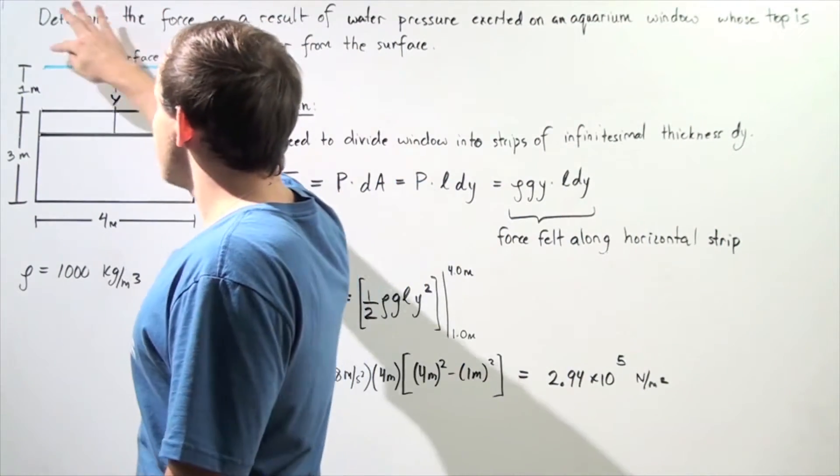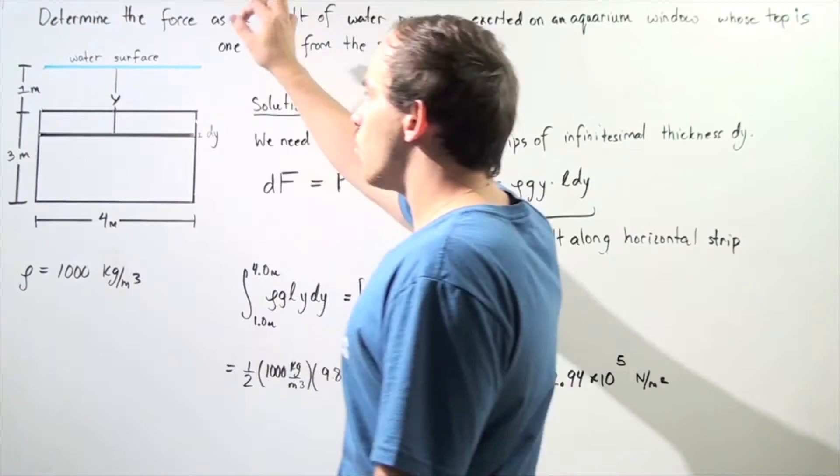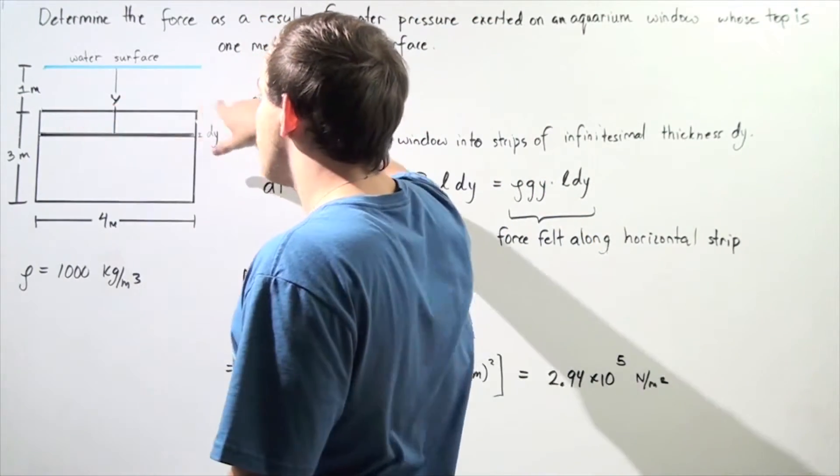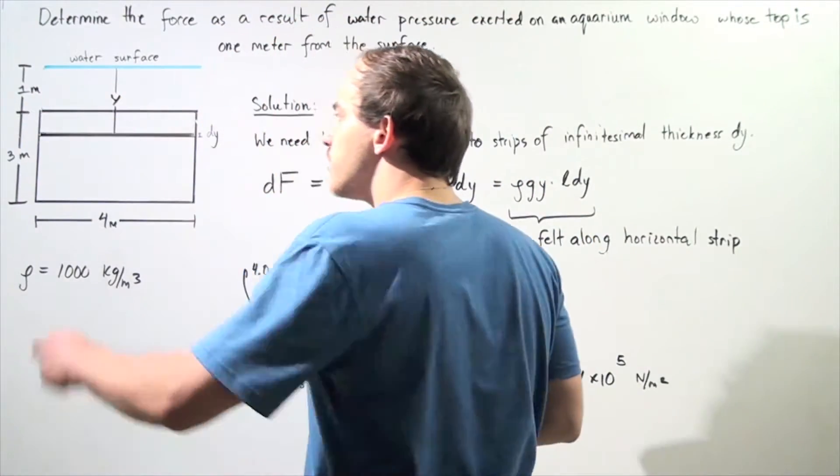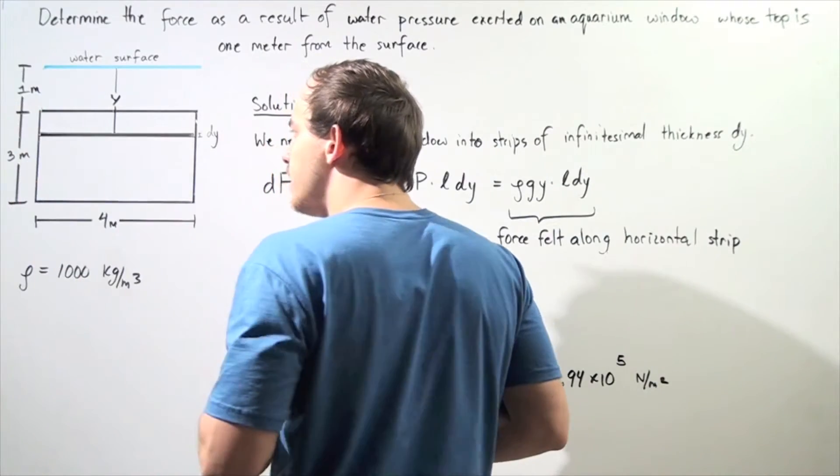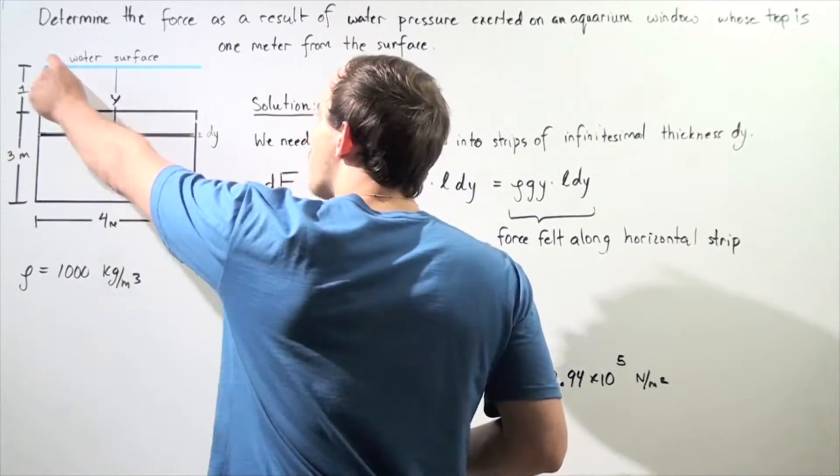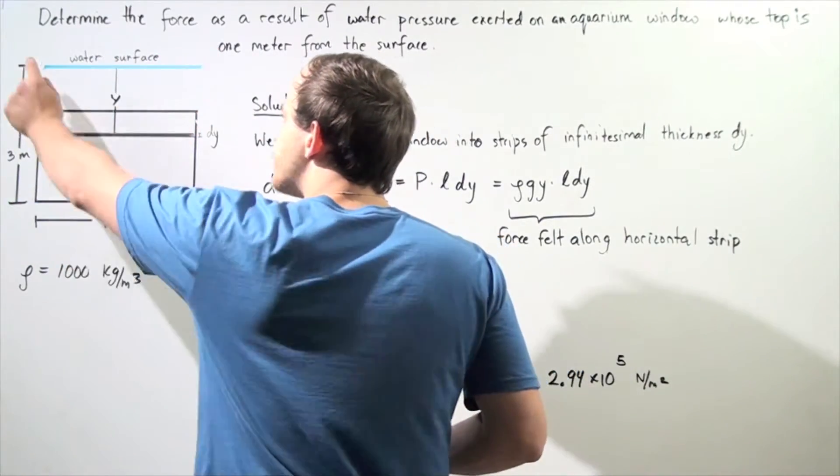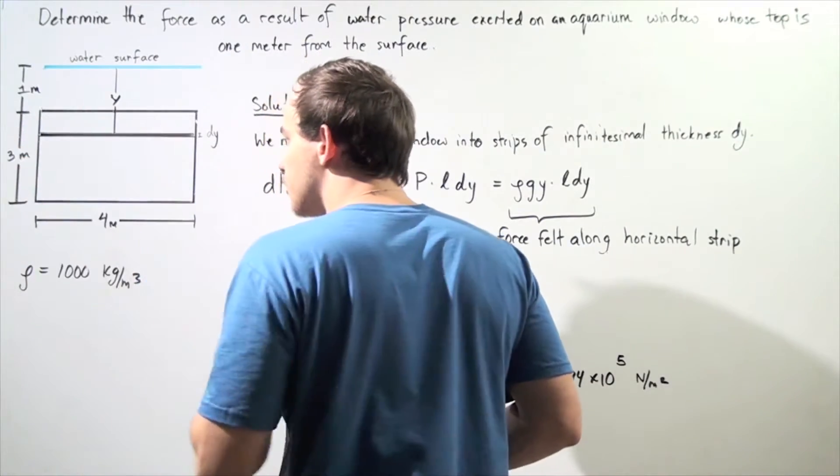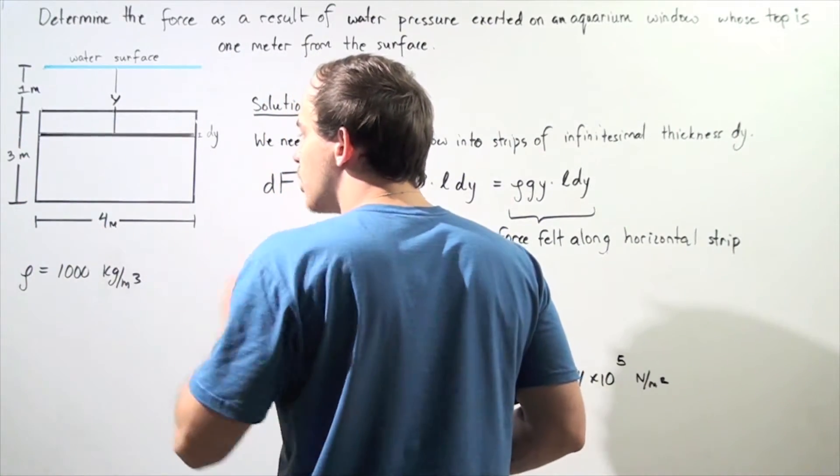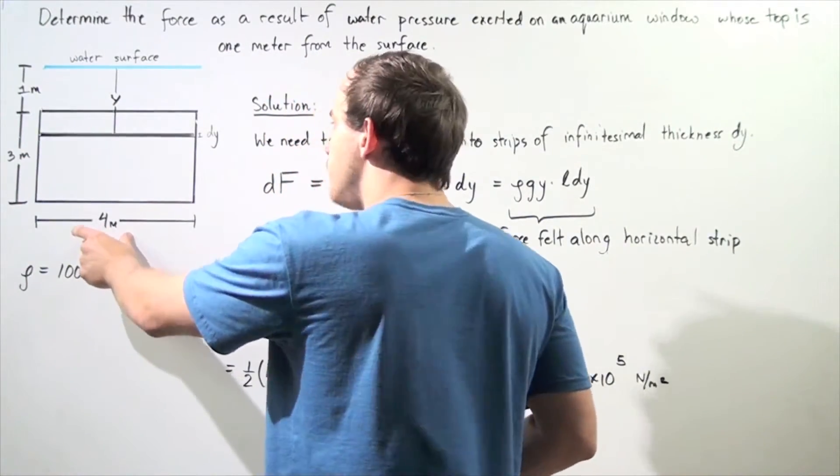So we have the surface of the water. The distance from the water to the top of the window is one meter. The height of the window is three meters. So the distance from the water surface to the bottom of the window is one plus three, four meters, and the length of our window is also four meters.